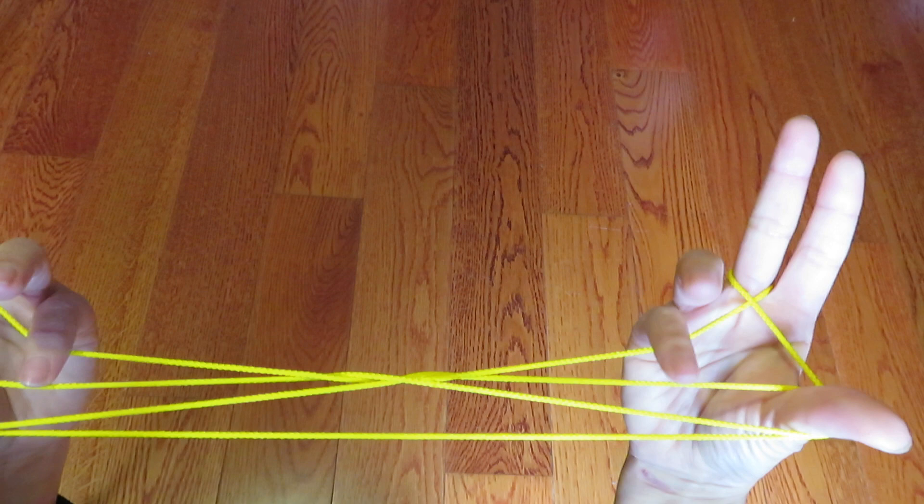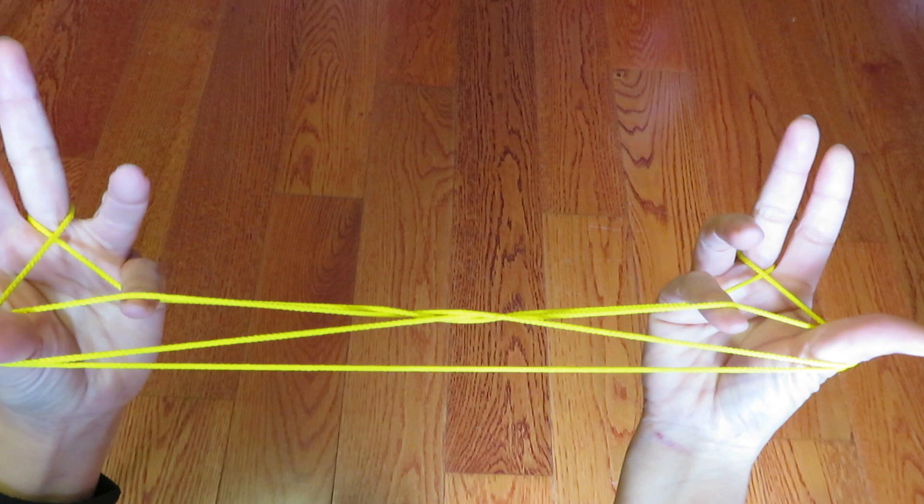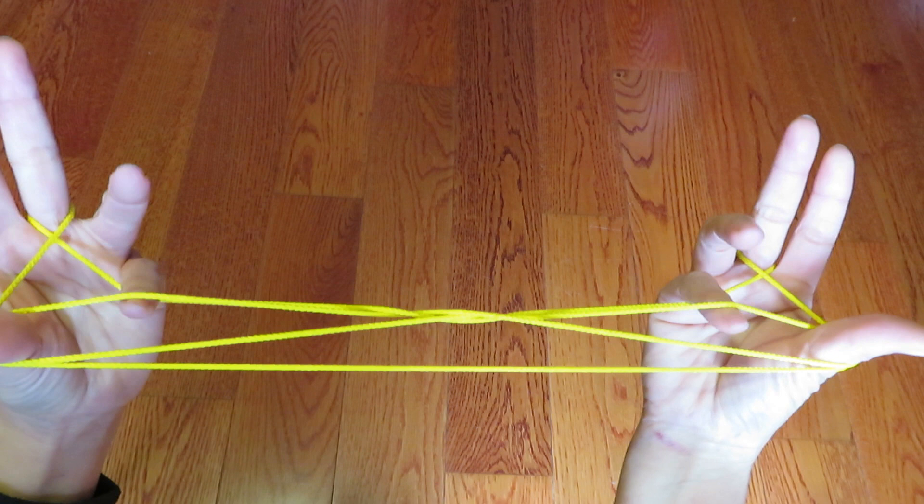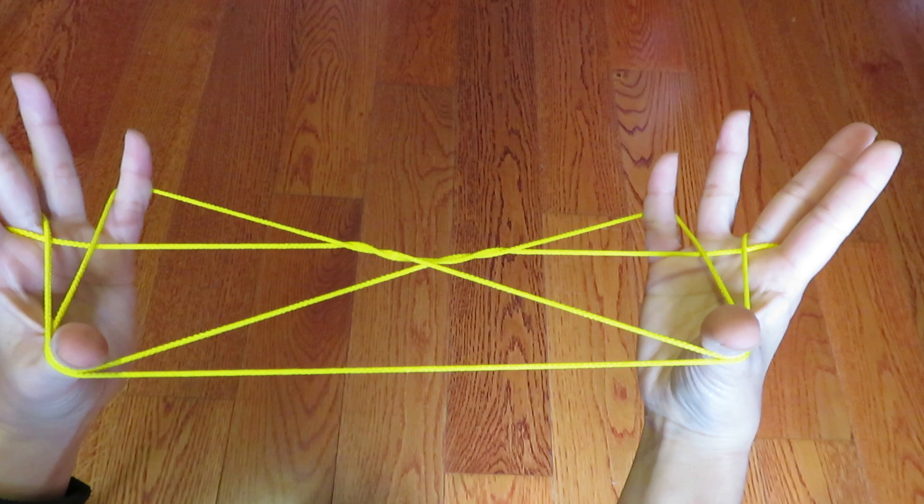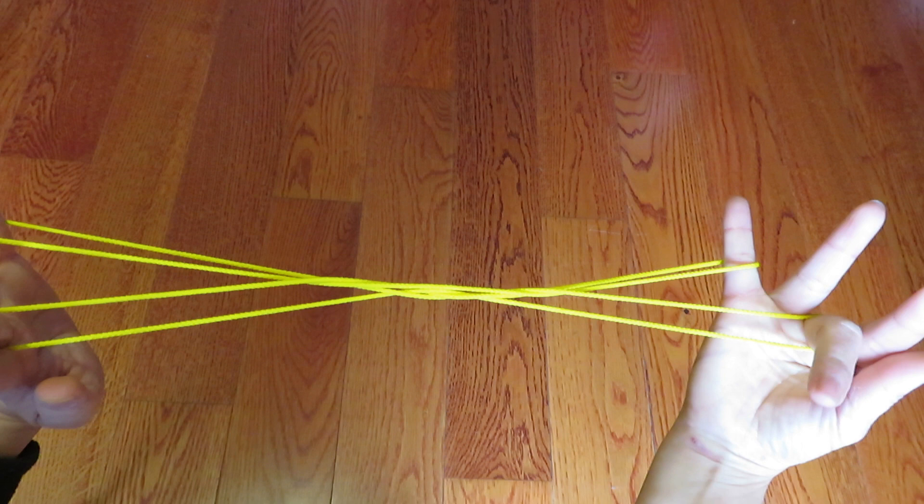Now, pick with both pinkies this, not this one, but this one. Both pinky, this one. Pick like this. And this time, let both thumbs go. All the strings on both thumbs go like this. And it looks like this.